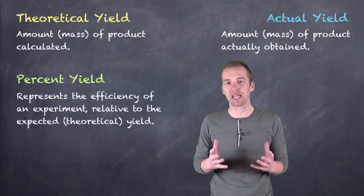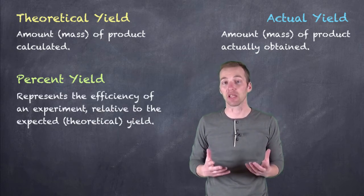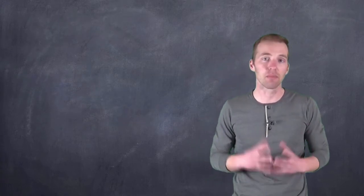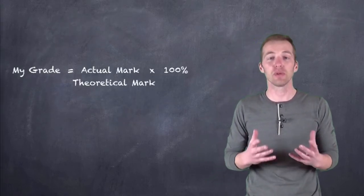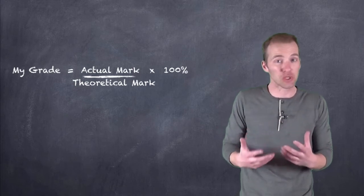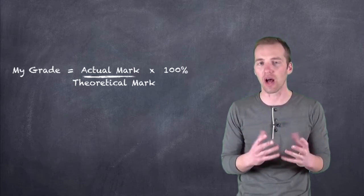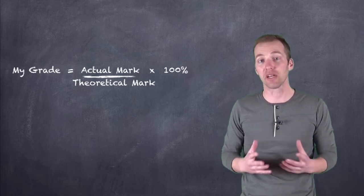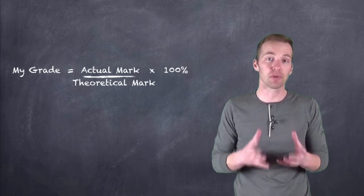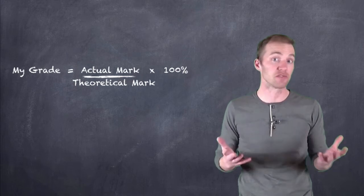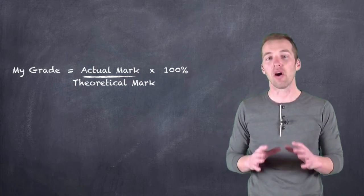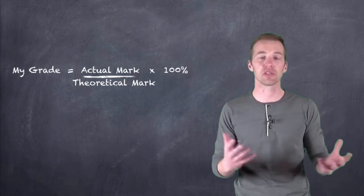So you can kind of think of percent yield almost the same way that you would calculate a mark. If you were going to calculate your mark on a quiz or a test, what you would do is you would take the mark that you actually got and compare it to the mark that you theoretically could have got had you gotten perfect. And then you're going to represent it as a percentage, and that's going to give you the percentage, or your percentage of success, if you want to think of it that way, on your particular test or quiz or assignment.